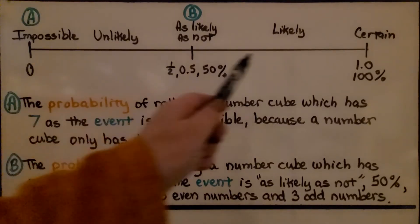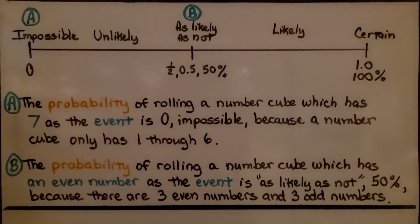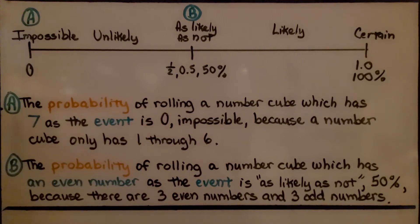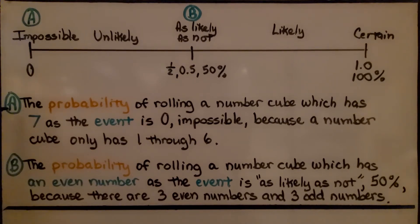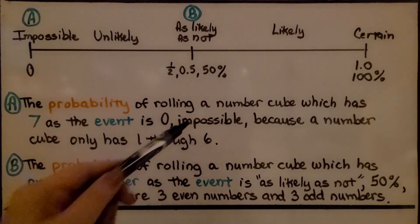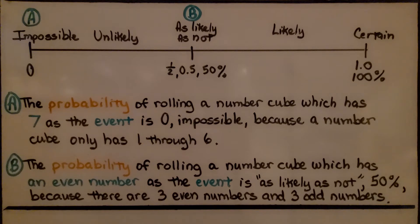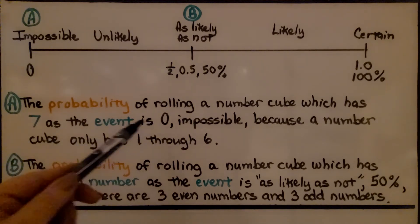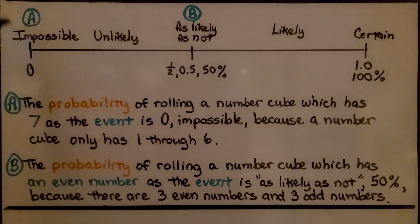So here we have our number line. Event A says the probability of rolling a number cube which has seven as the event is zero. A number cube, a regular number cube, has six sides and there is no seven. So the event is zero. It's impossible because a number cube only has one through six. The chance of it being a seven is zero.